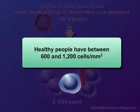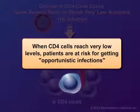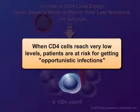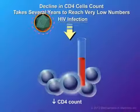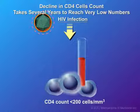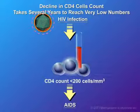Healthy people have between 600 and 1200 CD4 cells in a cubic millimeter of blood. When CD4 cells reach low or very low levels in the bloodstream, patients are at risk for getting serious infections or cancers. These are called opportunistic infections because they take advantage of the body's weakened defenses. Once CD4 cells fall below a level of 200 cells per cubic millimeter, or if a person has an opportunistic illness, this is considered an advanced stage of HIV infection called Acquired Immune Deficiency Syndrome, or AIDS.